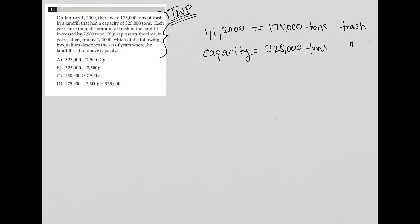Next sentence. Each year since then, the amount of trash in the landfill increased by 7,500 tons. So we're gonna go up by 7,500 tons per year. So again, I'm just writing down the notes, the summaries of what I'm reading in each one of these sentences, especially paying attention to the quantitative information.